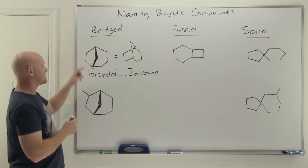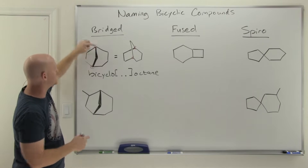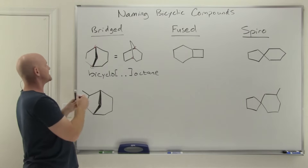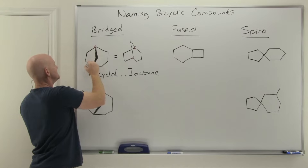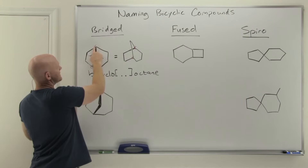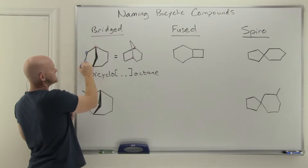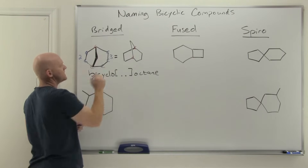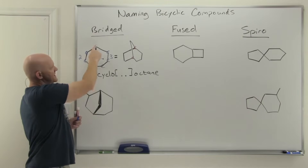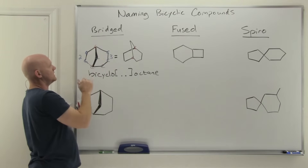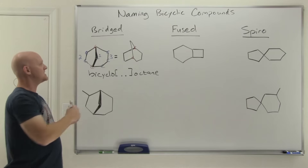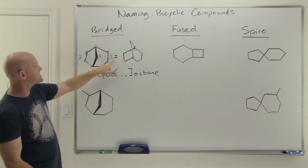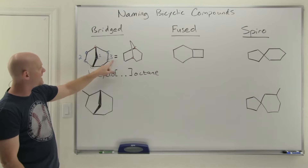We write 'bicyclo' and then 'octane,' but notice we save a little room in the middle for brackets. There are going to be three numbers placed in brackets, separated by periods. Those numbers come from the structure. We have to identify what are called bridgehead carbons — that's where the name 'bridged bicyclics' comes from. The bridgehead carbons are the two carbons that are part of every single one of the rings. Then count how many carbons are in between each bridgehead along each pathway, not counting the bridgeheads themselves, and place them in descending numerical order.